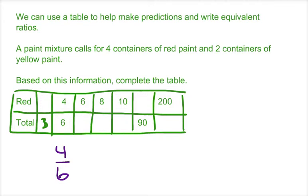Now, 4 to 6 in lowest terms, we can divide 4 and 6 both by 2, and we would get a ratio of 2 to 3. So if there are 3 total containers, we know that there should be 2 red containers. With that fact, that ratio in lowest terms can help us make the predictions for the rest of the table.